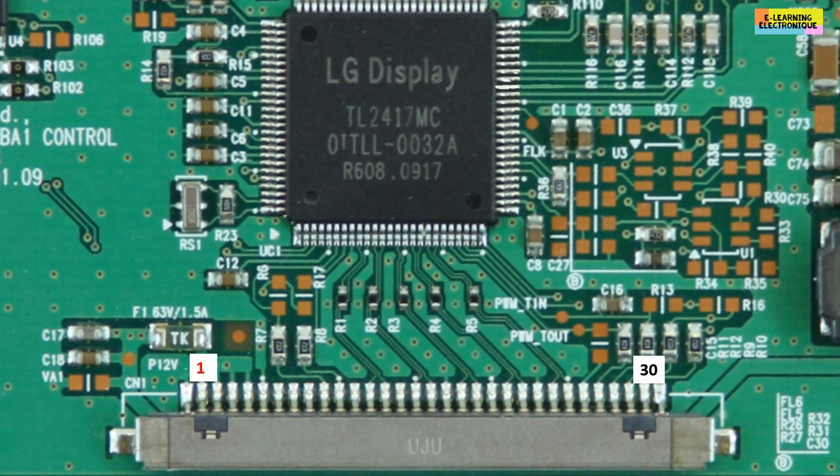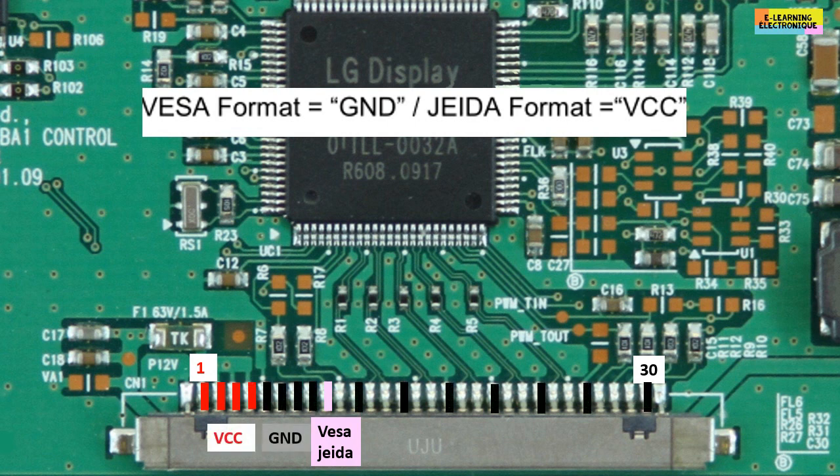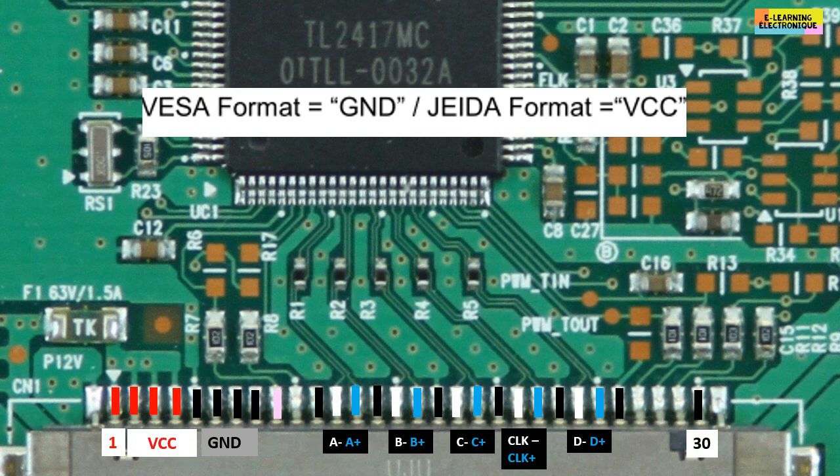Let's go back to our TCON board to see how to make this VESA or JEIDA modification. We have seen from the documentation that pin number 9 is the one that will be used to make the modification to obtain either VESA or JEIDA. The first four pins colored in red correspond to the VCC input of the TCON board. The black color corresponds to all the ground wires. The white and blue correspond to the wires carrying the data of the video signal.